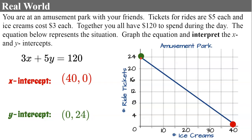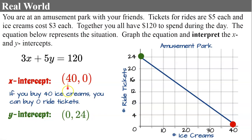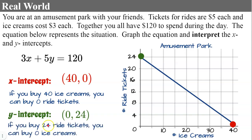This is technically a discrete function since you can't buy half an ice cream, but we connect it with a line to show the path of possible combinations. The x-intercept means that if we buy 40 ice creams, we can buy 0 ride tickets — we spent all our money on ice cream. The y-intercept means that if we buy 24 ride tickets, we can buy 0 ice cream. Any point between represents combinations of ice cream and ride tickets you could buy.